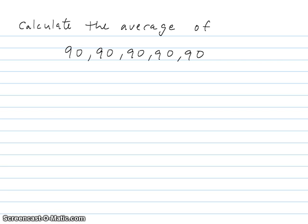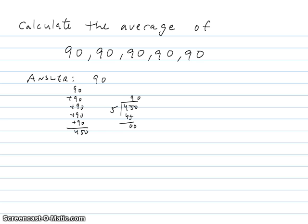Here's another question where I want you to do the same thing. First estimate what you think the average is, and then calculate it. The five numbers in this case are 90, 90, 90, 90, and 90. The answer also turned out to be 90. When you add up those five 90s, you get 450 divided by 5, which is 90.